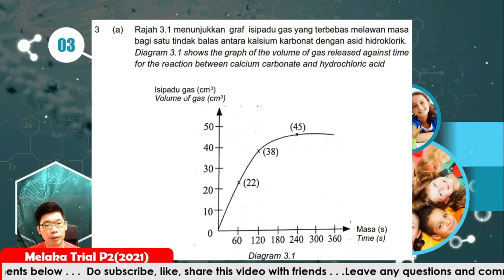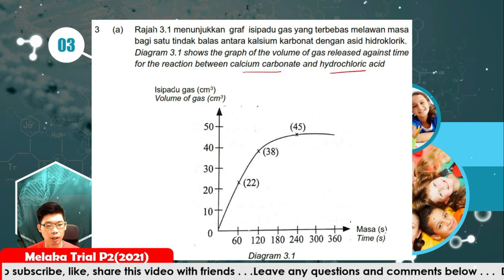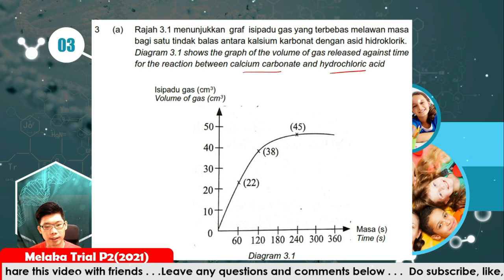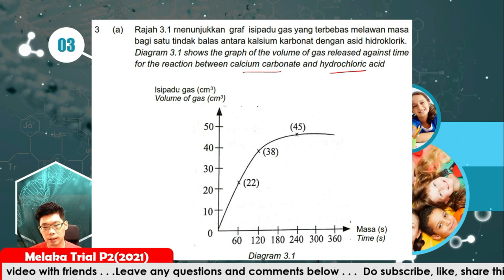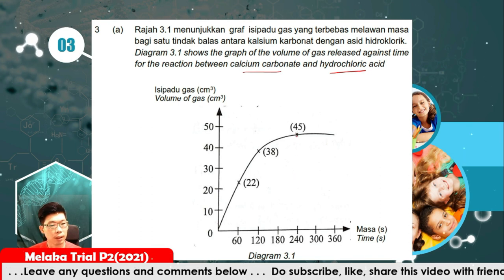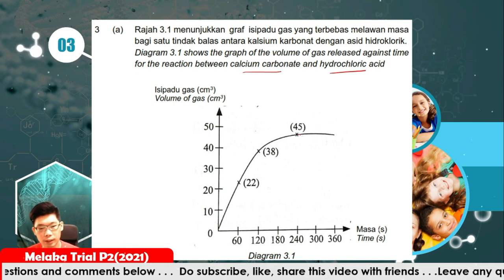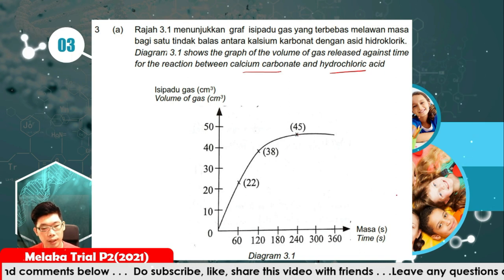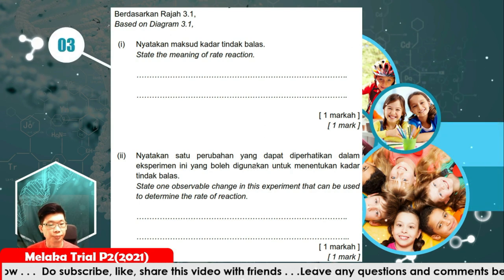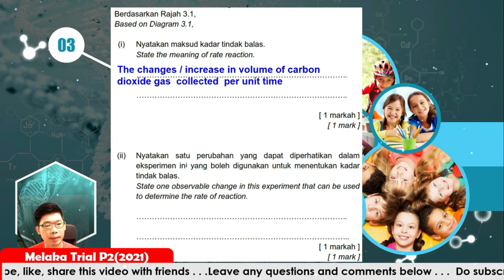Question number 3. A graph shows the volume of gas released against time for the reaction between calcium carbonate and hydrochloric acid. After 240 seconds, the reaction has stopped at 45 cubic centimetres. The meaning of rate of reaction is the change or increase in the volume of carbon dioxide gas collected per unit time.